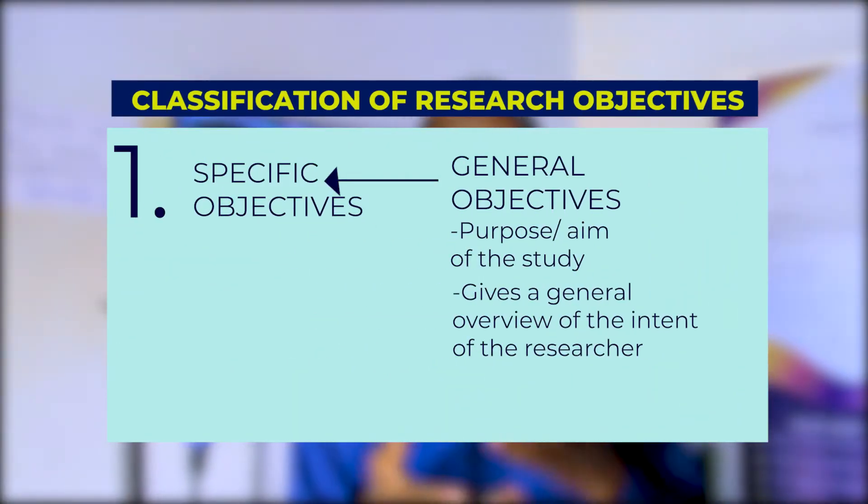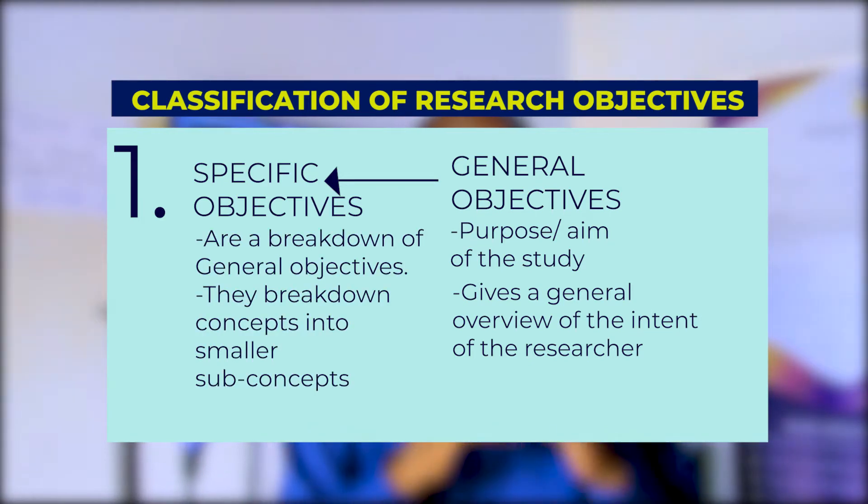Specific objectives are a breakdown of the general objectives — they break the broad concept into smaller sub-concepts. For instance: 'to determine the relationship between salary and performance,' 'to determine the influence of allowances on performance,' or 'to investigate the role of fringe benefits on performance.' You can see we have action verbs and nouns indicating the expected outcome of the study.